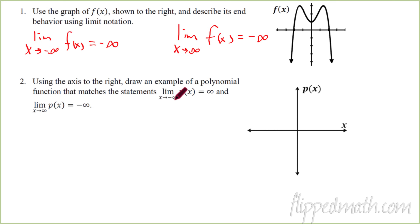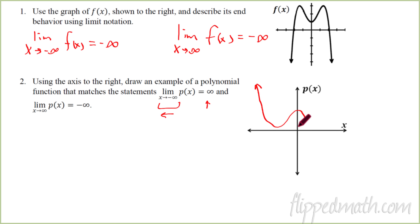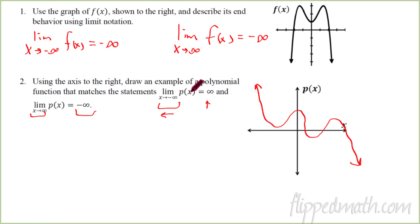Number two says: using the axis to the right, draw an example of a polynomial function that matches the following. The limit as X approaches negative infinity equals positive infinity — that means as I go to the left, it has to go up. And as we go to the right, the function is going to negative infinity. So maybe we come up and go all the way down there to negative infinity. As you go to the left, the limit as X approaches negative infinity of P of X is infinity because it's going up forever. And as you go to the right, as X approaches infinity, the function value will eventually hit negative infinity because it's going down forever. That's end behavior.